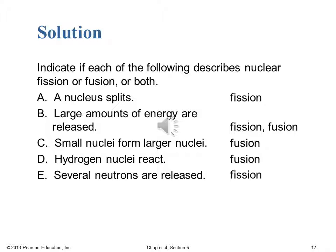For A, where a nucleus splits, that's fission — fission involves a large nucleus splitting into smaller nuclei. For B, large amounts of energy are released — that's true of both fission and fusion. For C, small nuclei form larger nuclei — that's fusion; the small nuclei fuse into a larger nucleus. For D, hydrogen nuclei react — that's also fusion; we talked about the tritium and deuterium isotopes of hydrogen reacting to form helium. And finally, E, several neutrons are released — that's fission, specifically fission of uranium-235, where it takes one neutron to cause the U-235 nucleus to decay and that process produces three neutrons.